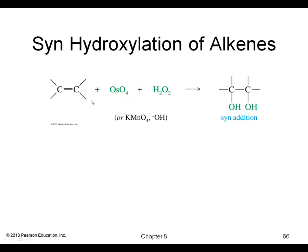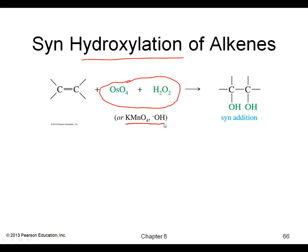The next reaction of alkenes is called the hydroxylation reaction. We react with osmium tetroxide (OsO4) and hydrogen peroxide (H2O2), or alternatively with potassium permanganate (KMnO4) and OH⁻. Both reactions give you the syn addition of two OH groups to give you the cis-diol.